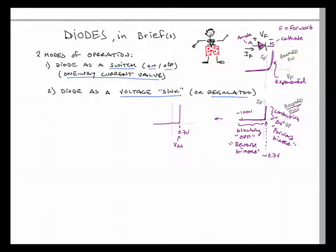The second use of the diode is as a regulator. Once the diode starts conducting, the forward voltage VF is approximately constant. It does grow with current, but if you zoom out enough, it looks like once it turns on, it has a pretty constant voltage, and that can be put to use.